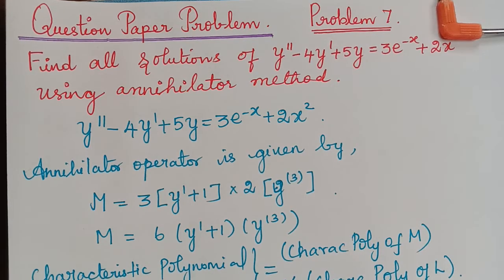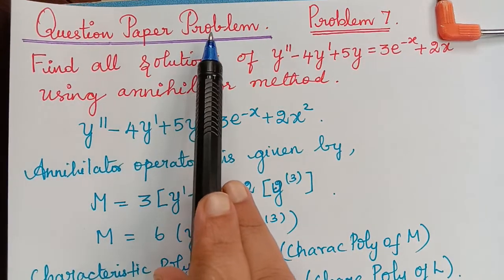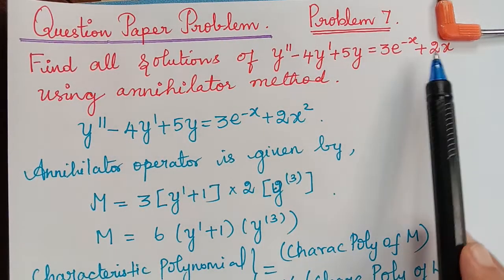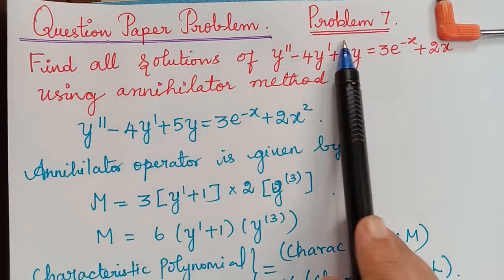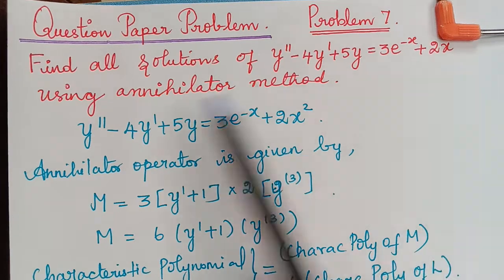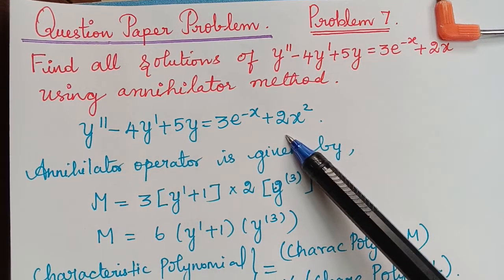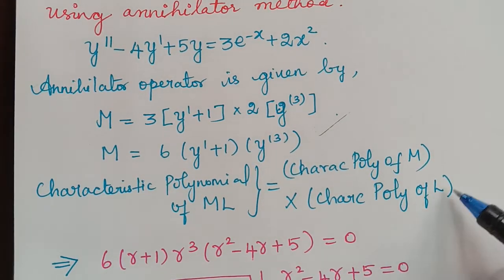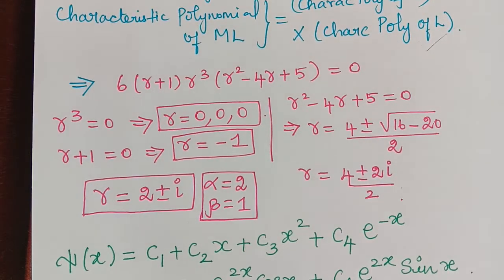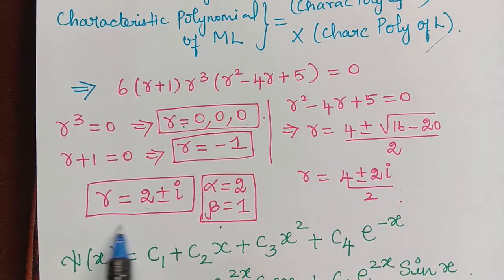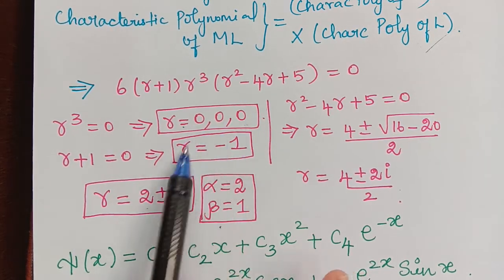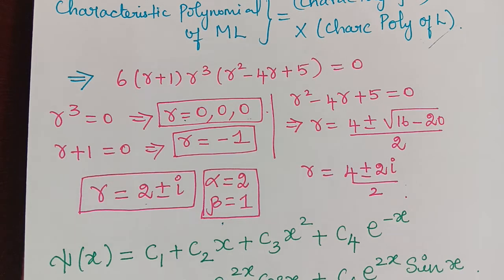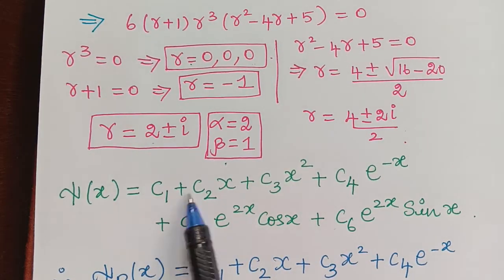This next problem is a question paper problem — it has appeared in an actual exam, and it is the last problem of this topic, covering the full topic. Problem 7: find all solutions of this differential equation using the annihilator method. We find the annihilator operator, the characteristic polynomial, and the roots. Two roots are imaginary, and among the remaining roots, one is R = 0 of multiplicity 3.